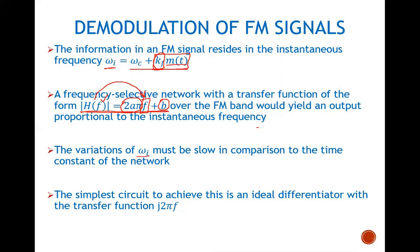Variations in the instantaneous frequency must be slow in comparison to the time constant of this network. The network should have a time constant much larger than omega_i — in other words, the instantaneous frequency variations must be slow compared to the time constant of this circuit. The simplest circuit to achieve this is an ideal differentiator, whose transfer function is simply j*omega.